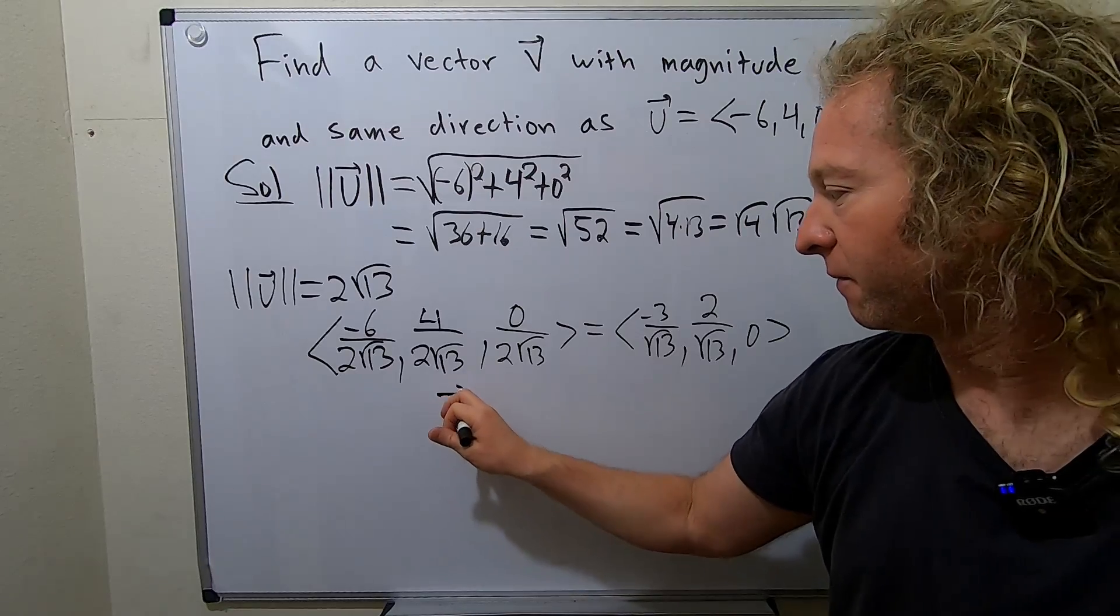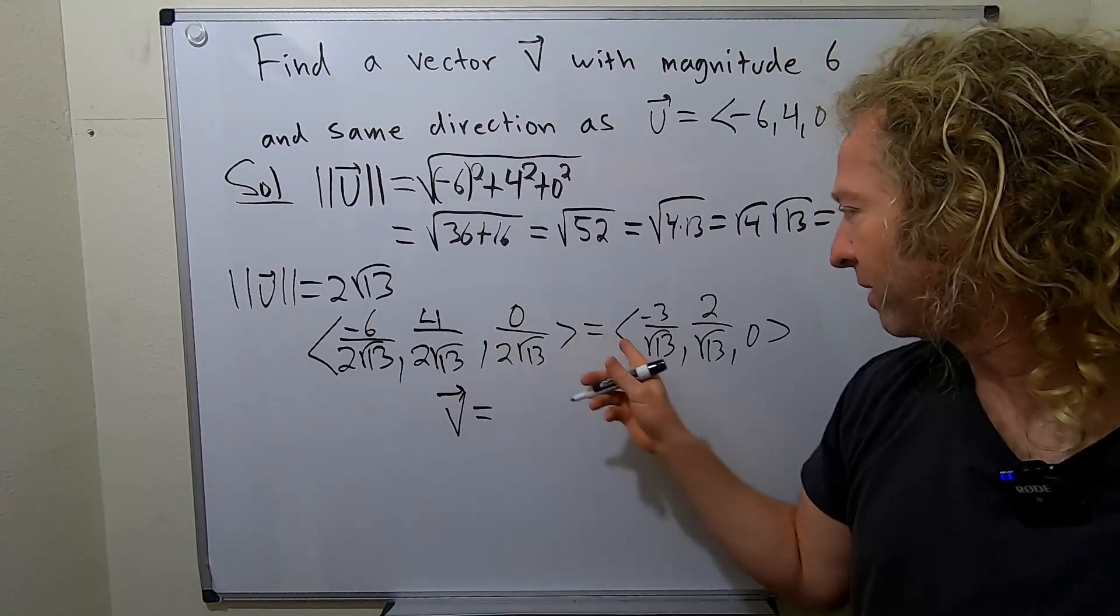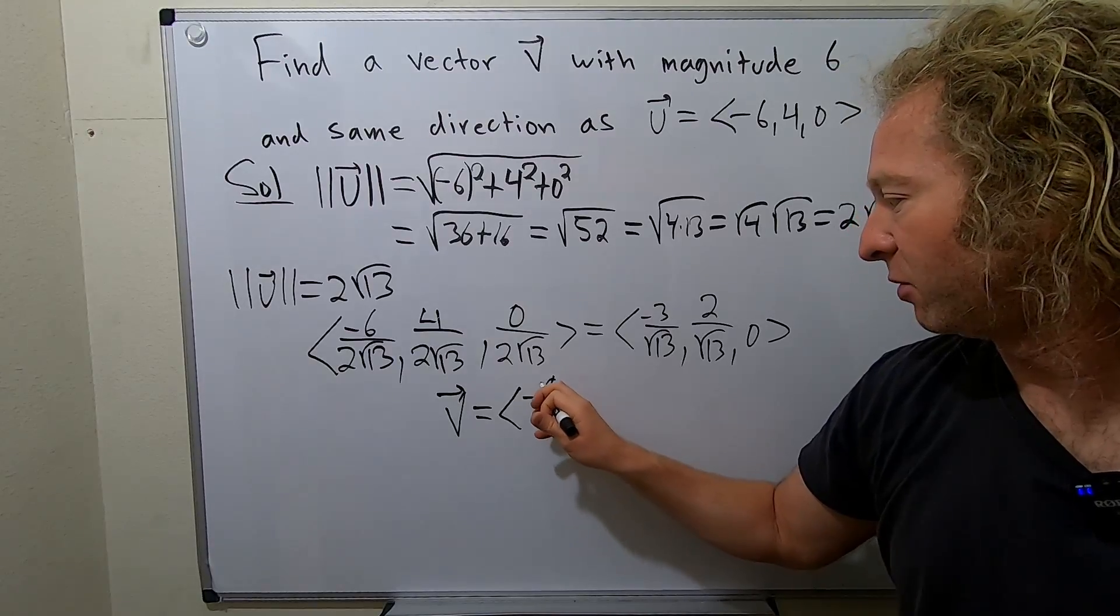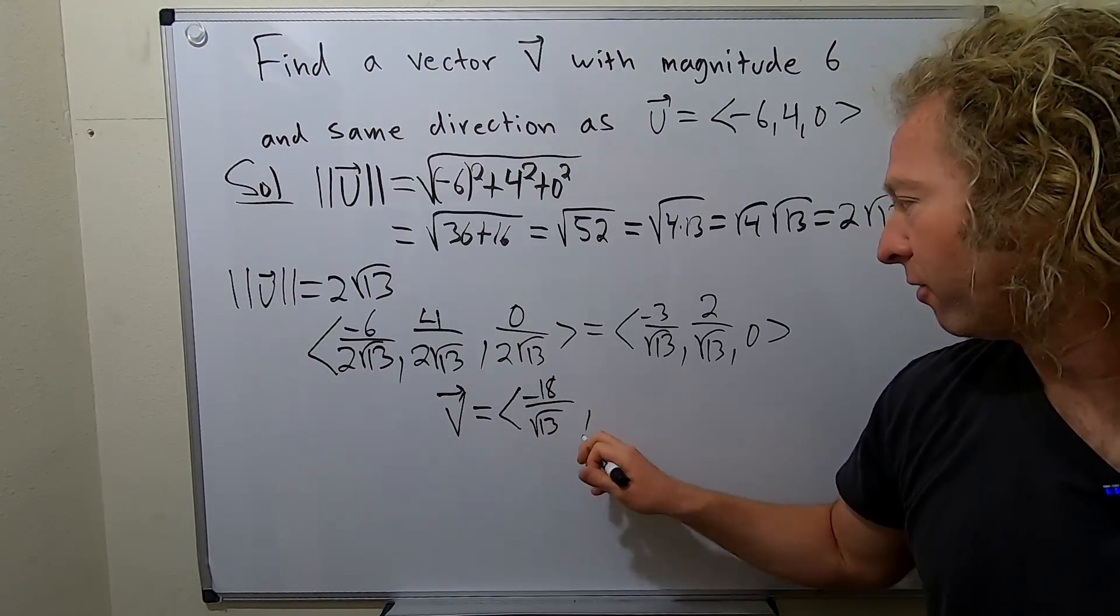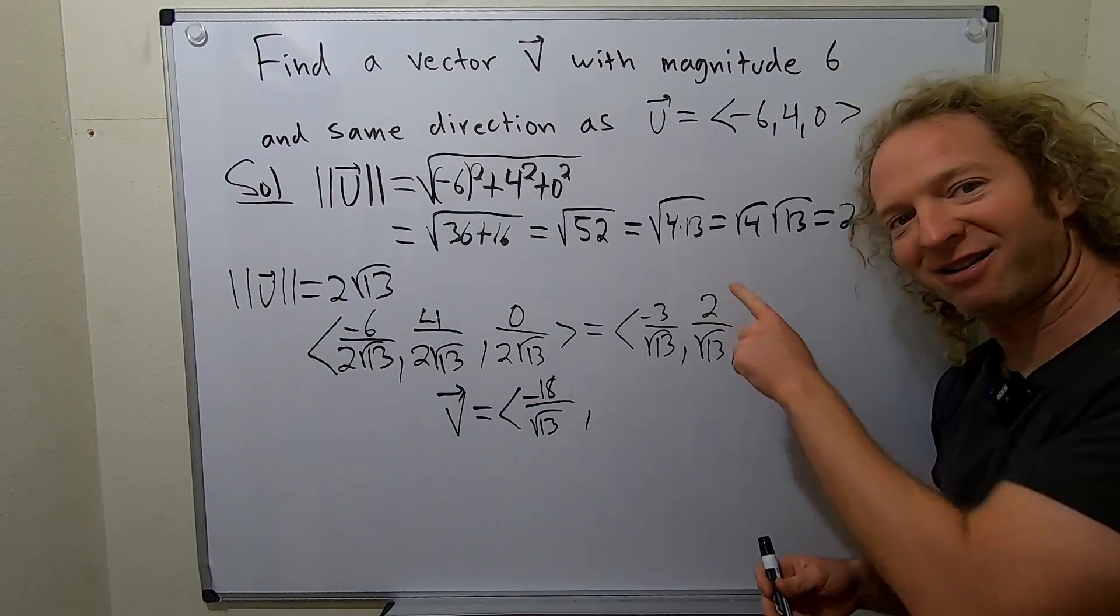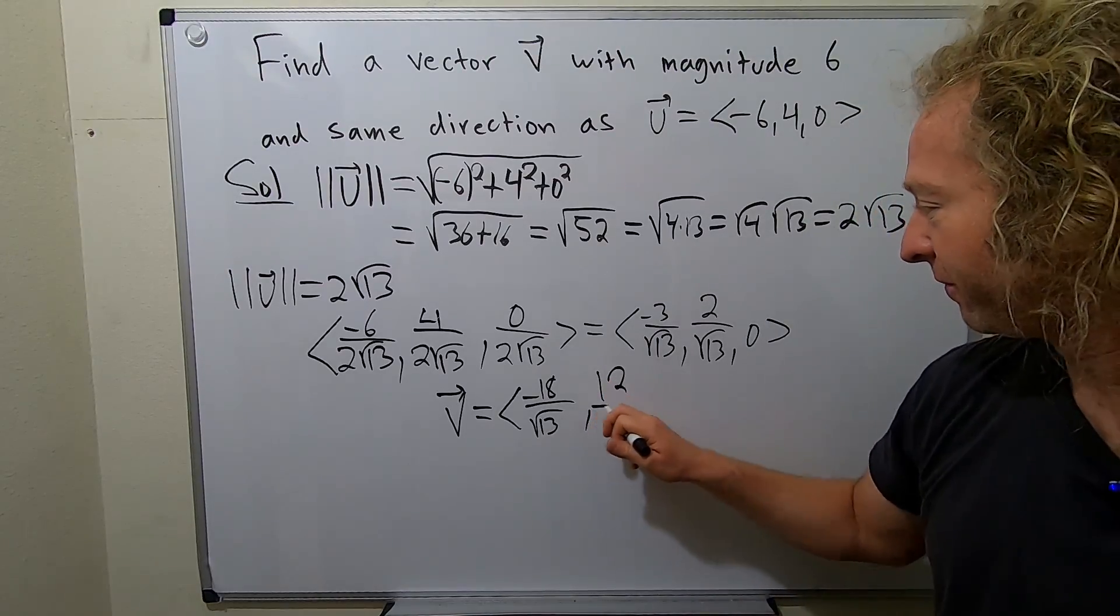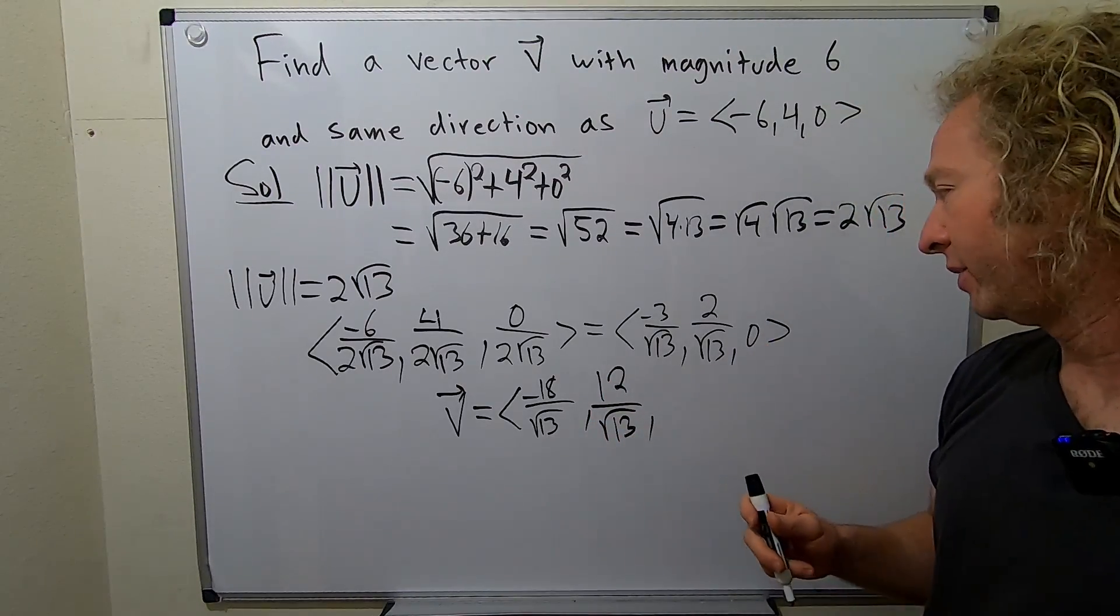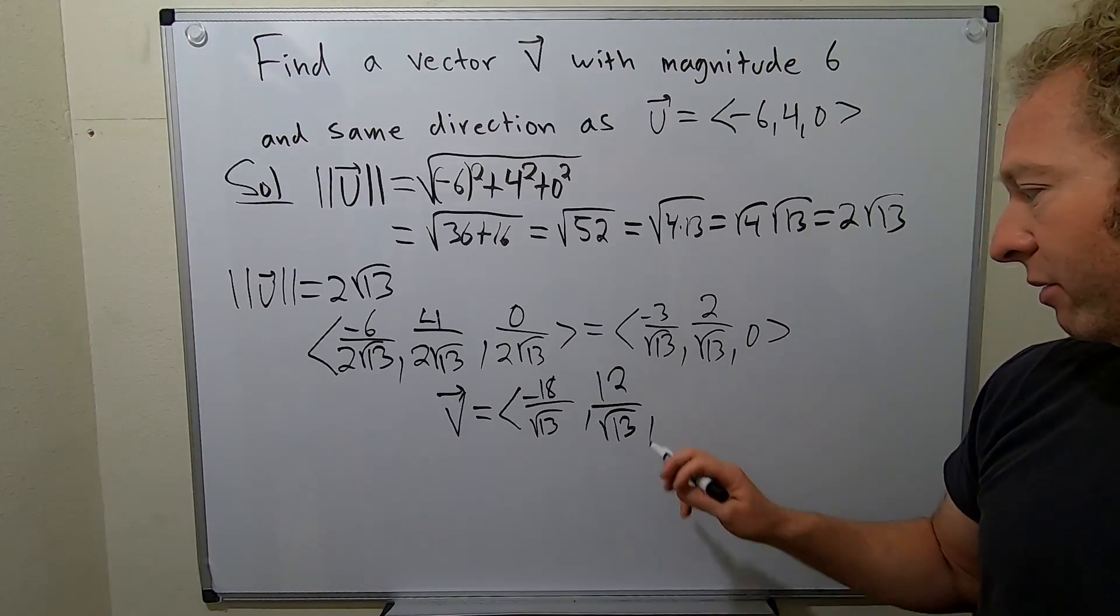So our vector v, which is multiplying everything by 6. So 6 times negative 3 is negative 18. I'm really happy with this marker. If you're wondering why I'm saying that, it's because I made a video before this, and the marker was not very good. 6 times 2 is 12. 6 times 0 is 0.